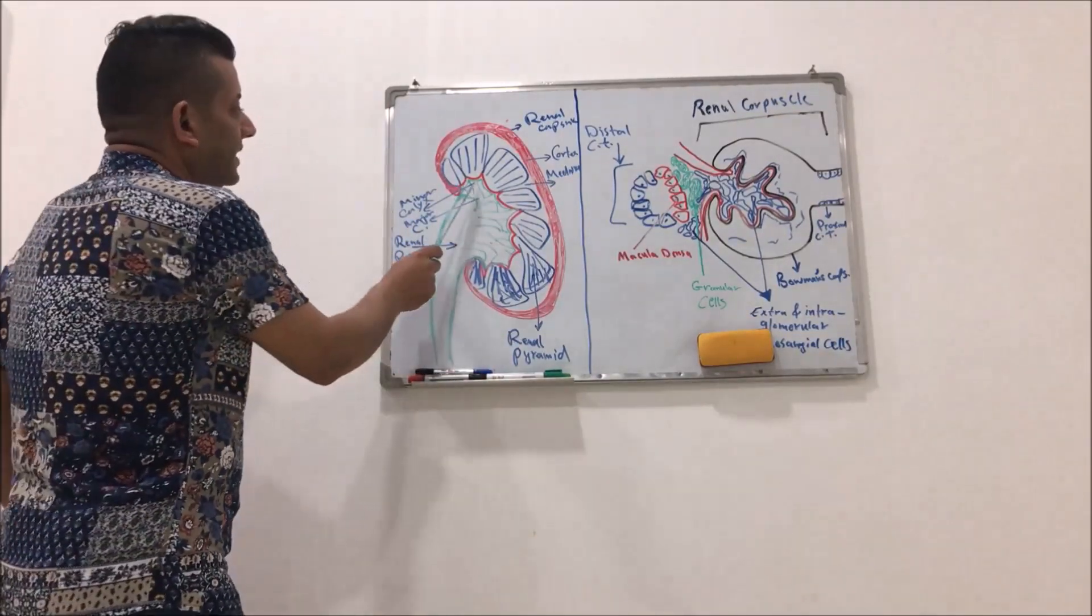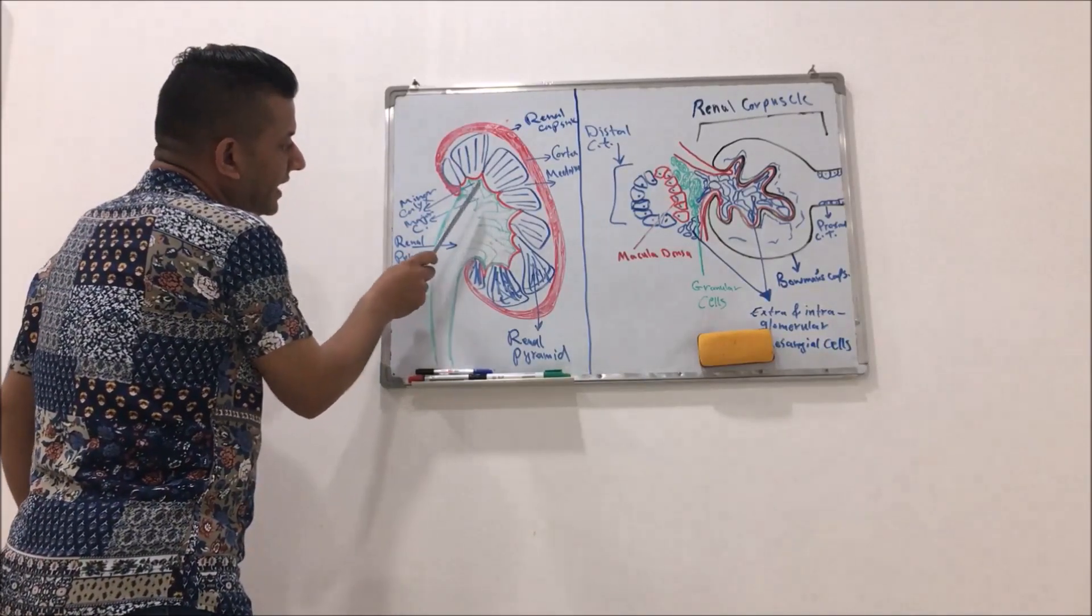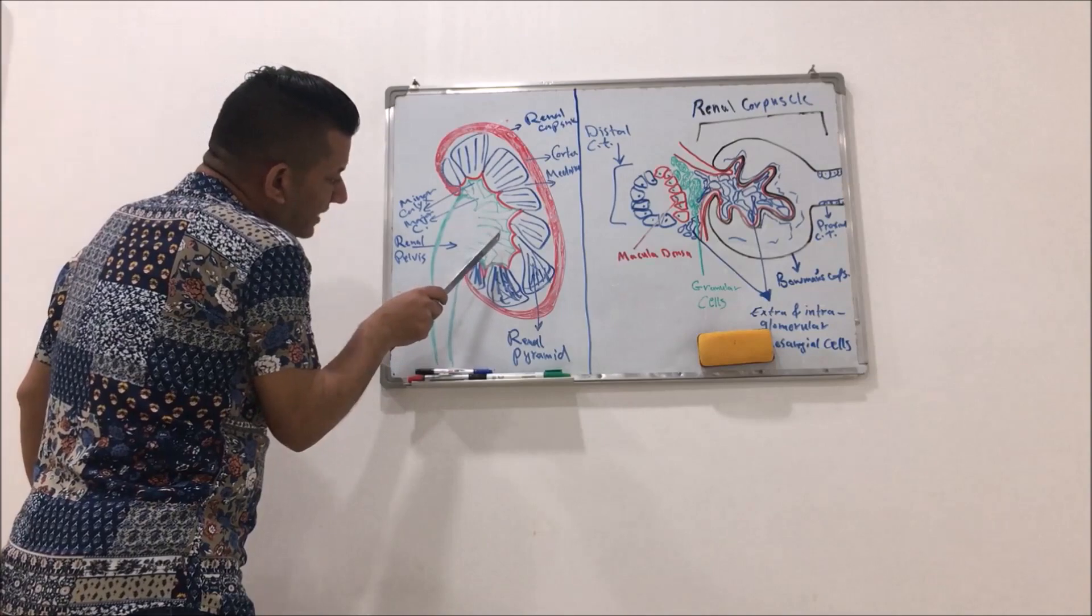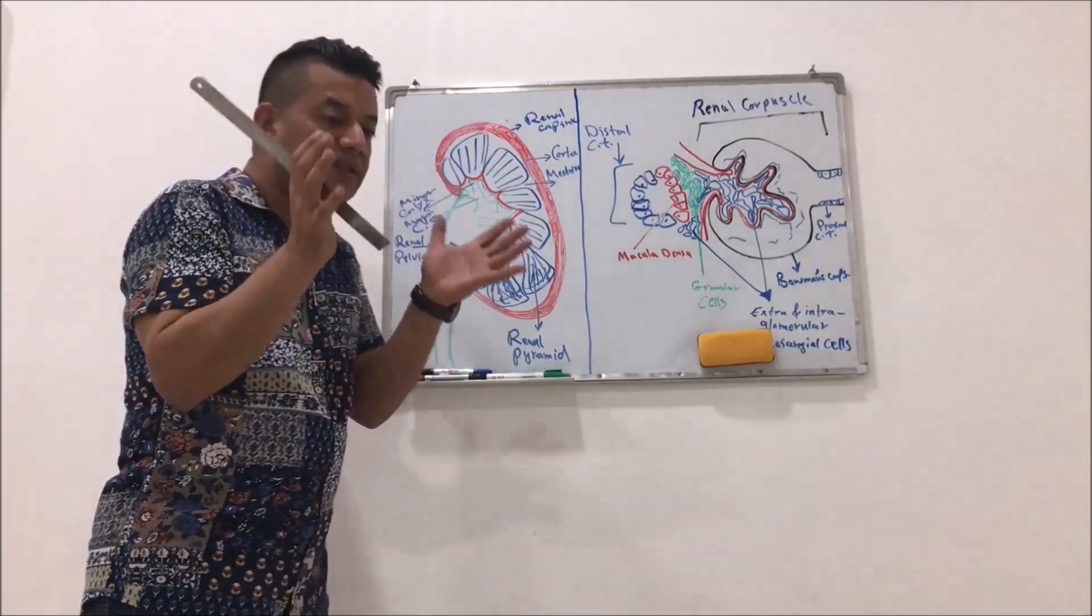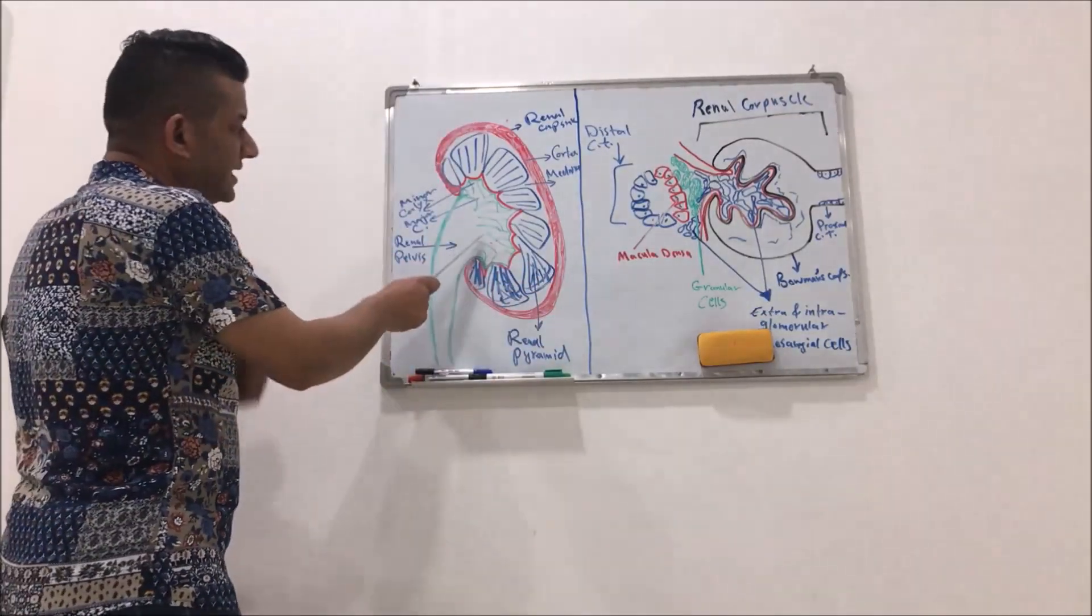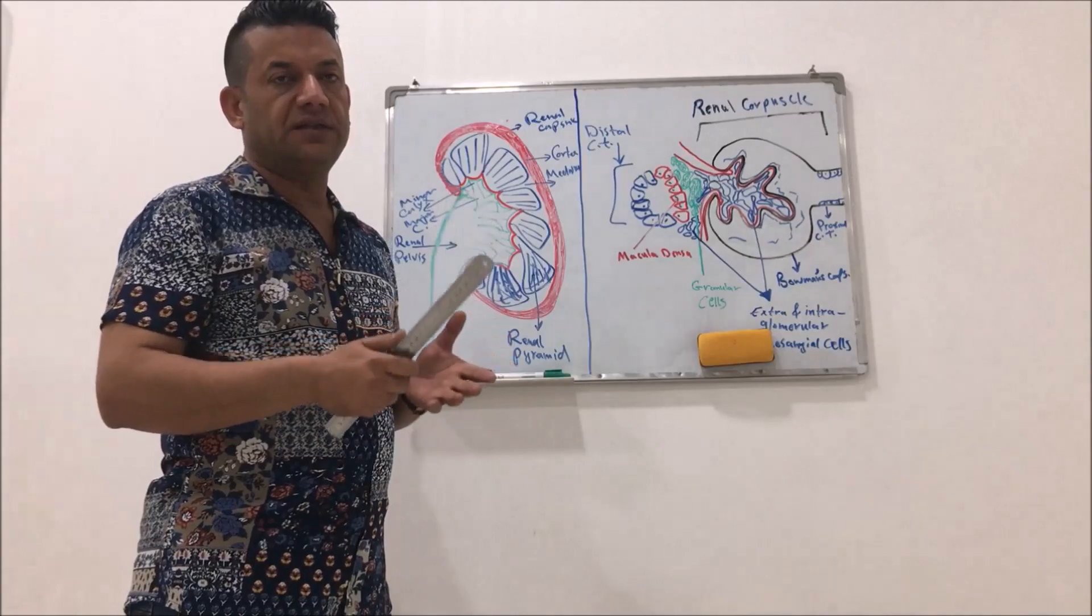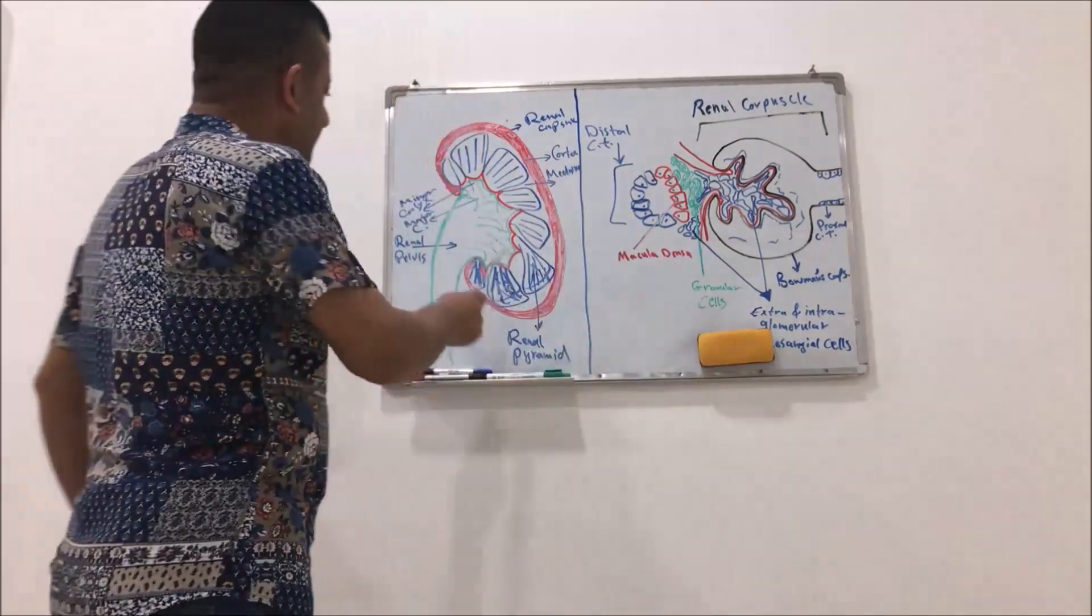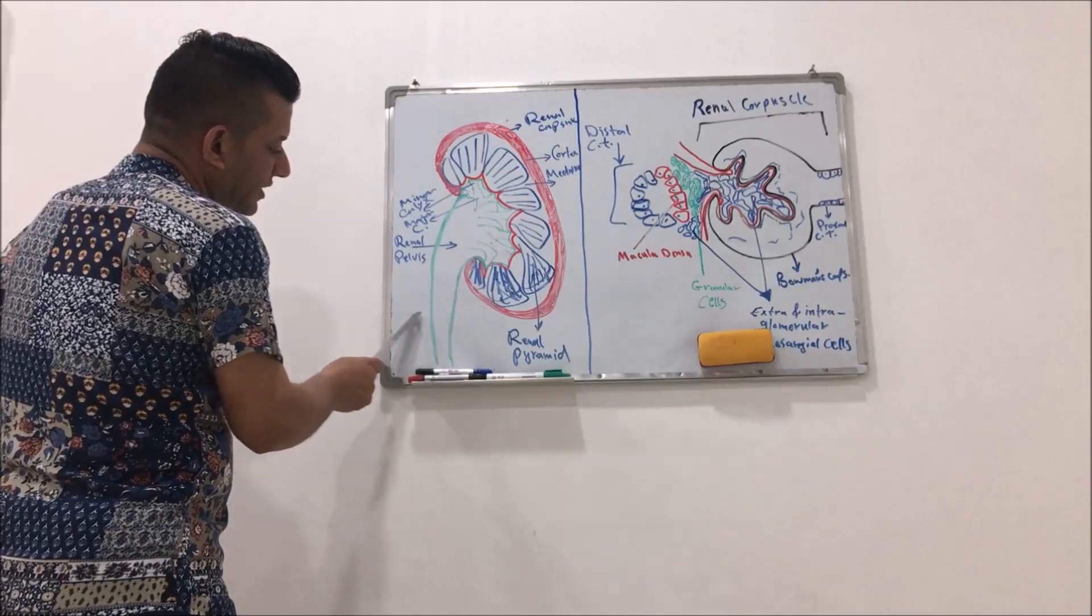So the calyces consist of minor calyx and major calyx. Here are the minor calyces, while here are the major calyces. And all the calyces will unite to pour into the renal pelvis. Of course, they will pour what? The urine with its waste products. And throughout the renal pelvis, then, the urine will flow into the ureter.